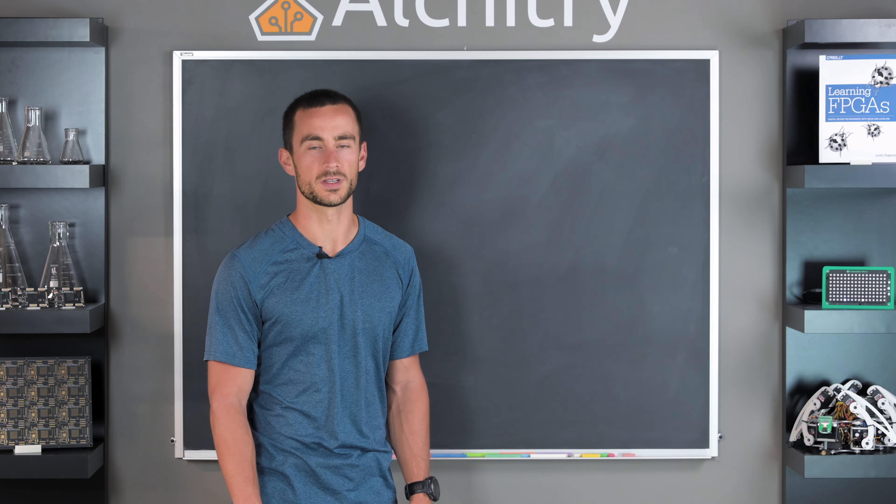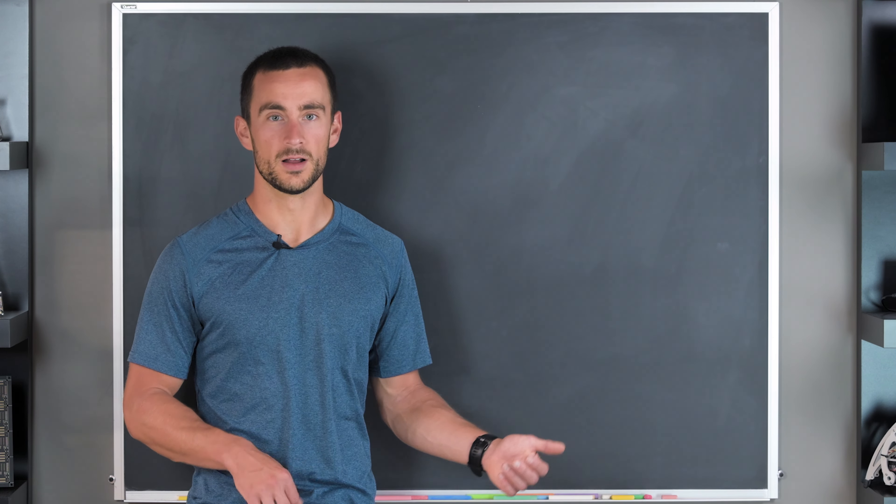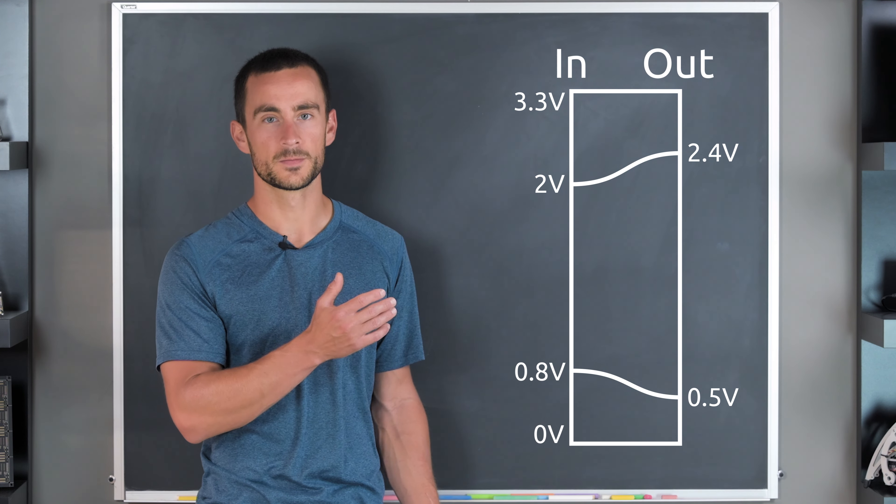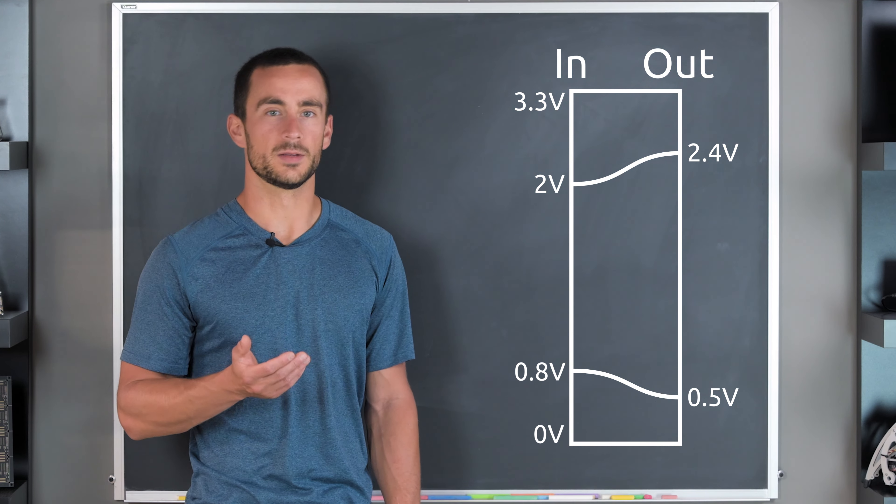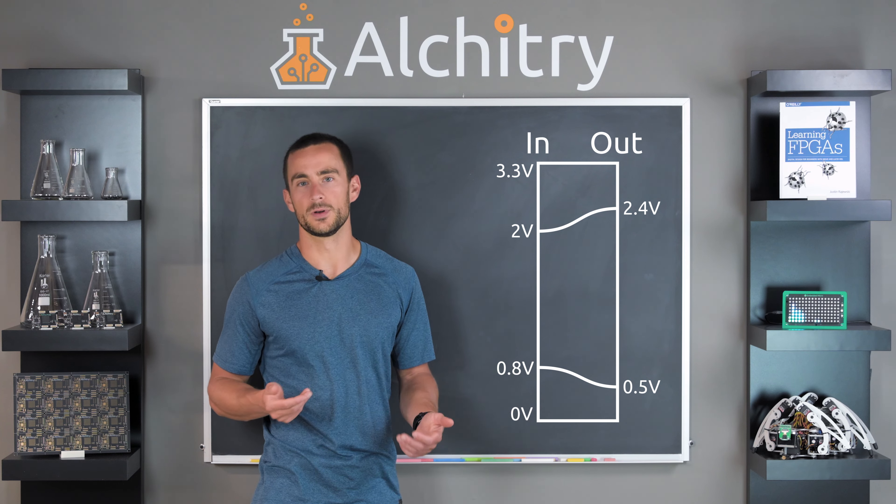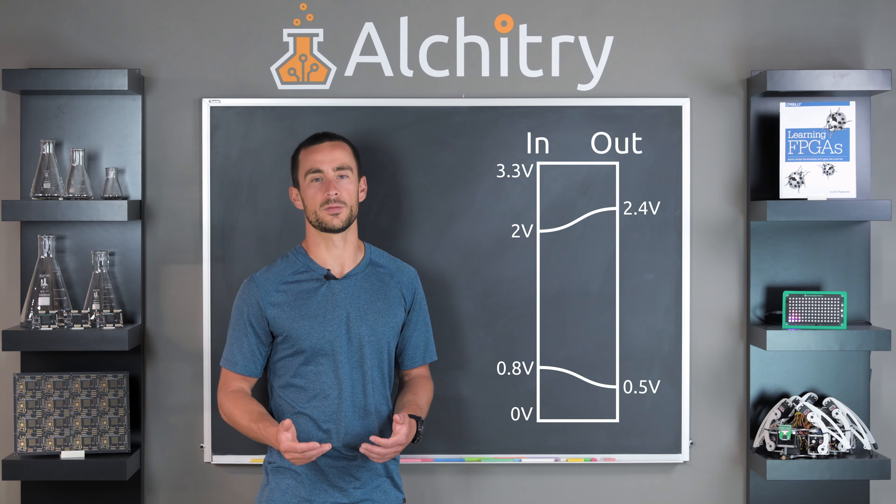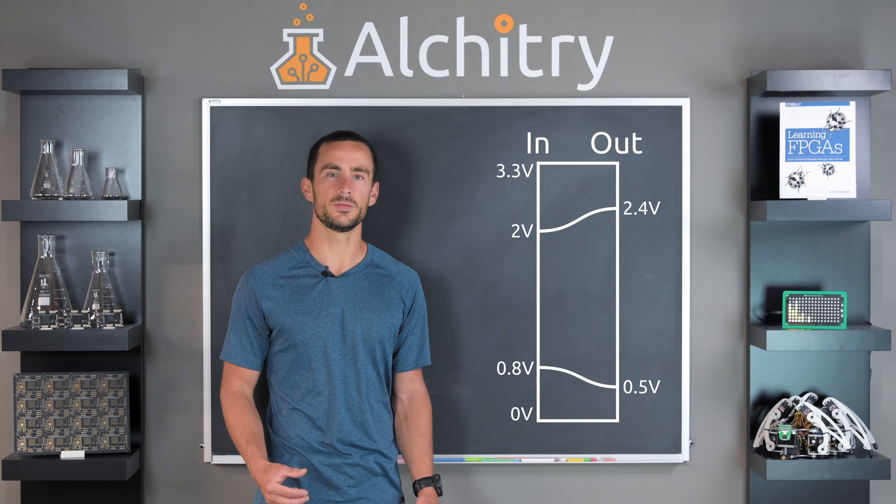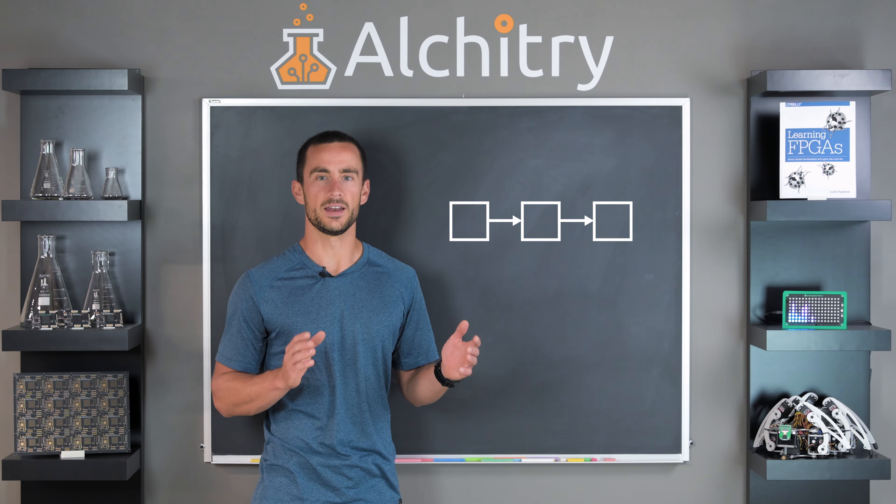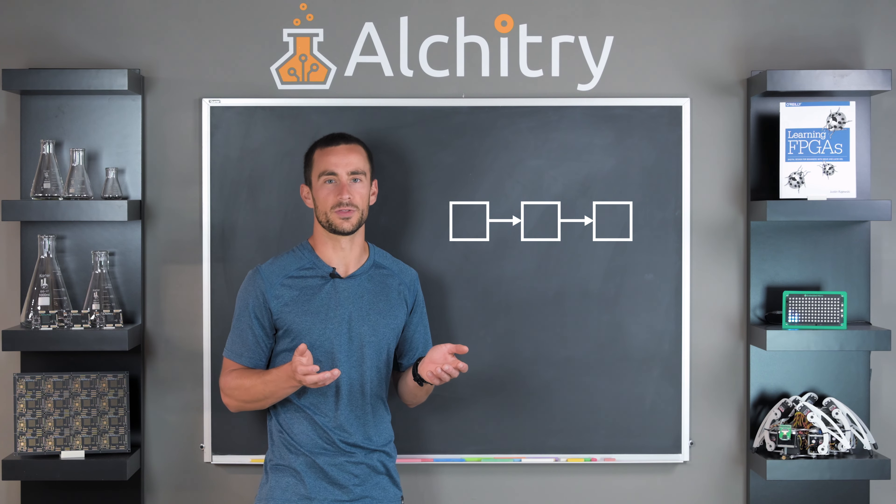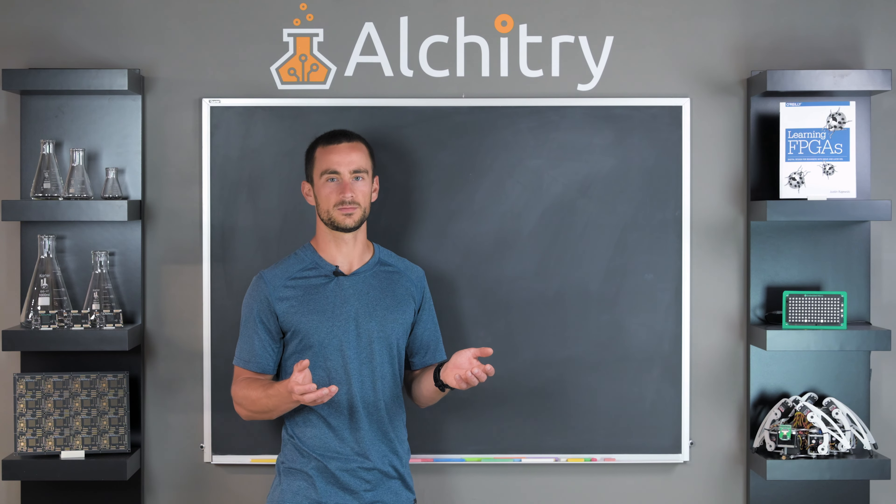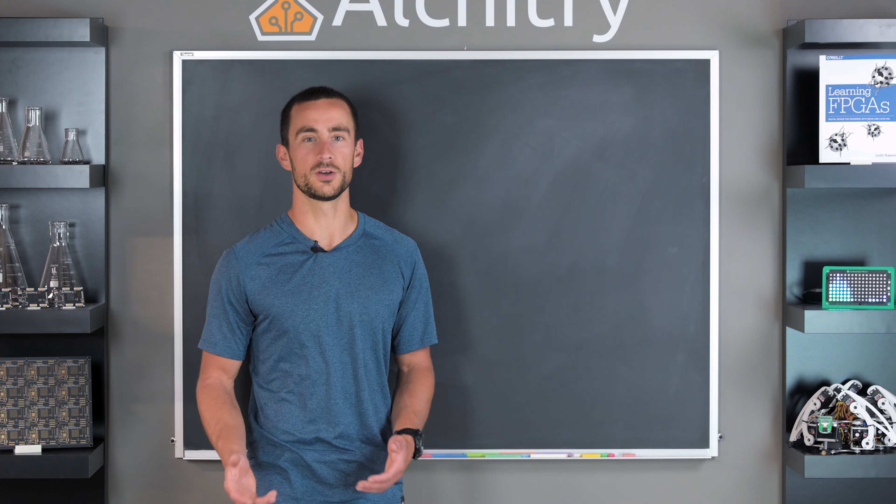Instead, digital circuits are designed to remove noise. For example, in our 3.3 volt example from before, a circuit may be designed to accept anything from 0 to 0.8 volts as a 0, but may output something between 0 and 0.5 volts for a 0. For 1s, it may accept something between 2 and 3.3 volts and output between 2.4 and 3.3 volts. This means that each stage is trying to actively maintain the extremes of 0 and 3.3 volts. If you connected a bunch of these stages together and injected up to plus or minus 0.3 volts between each stage, it would still operate exactly the same as if it was in a sterile environment.